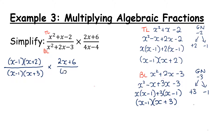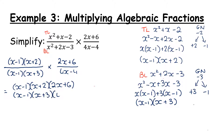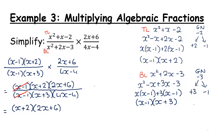Our rule is multiply across the top and bottom. On the top: (x minus 1)(x plus 2) multiplied by (2x plus 6). On the bottom: (x minus 1)(x plus 3)(4x minus 4). At this point we can see x minus 1 appears above and below the line, so we can simplify that. What we're left with is (x plus 2)(2x plus 6) over (x plus 3)(4x minus 4). We notice that 2x plus 6 and 4x minus 4 can both be factorized by taking out a common factor.